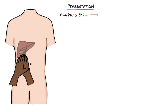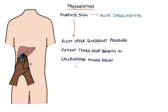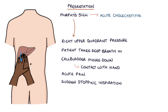Murphy sign, which is suggestive of acute cholecystitis, is tested by placing a hand in the right upper quadrant and applying pressure, then asking the patient to take a deep breath in. During inspiration the gallbladder moves downwards and comes into contact with your hand. Stimulation of an inflamed gallbladder as it rubs past your hand results in acute pain and sudden stopping of inspiration. If the patient experiences sudden acute pain and stops breathing in, this is a positive Murphy sign and suggests acute cholecystitis.